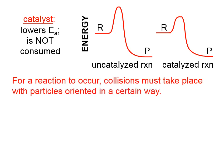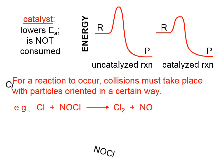For a reaction to occur, collisions must take place with particles oriented in a certain way. It's not enough that particles have enough energy — they also have to collide in the right orientation. For example, if the two reactant particles collide in one way, our products are Cl₂ and NO.